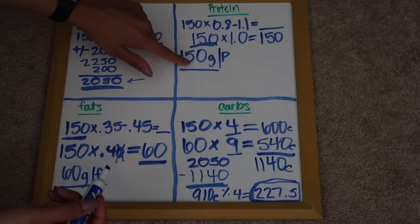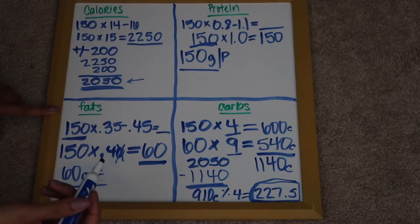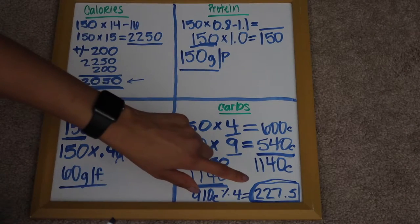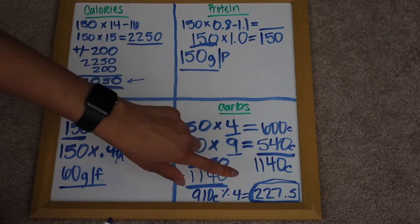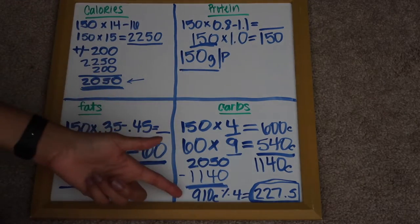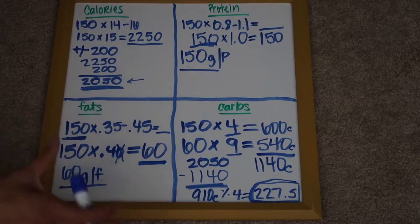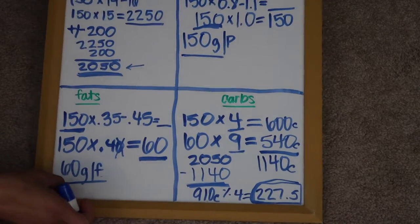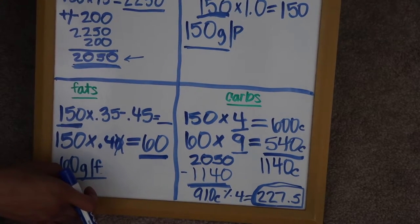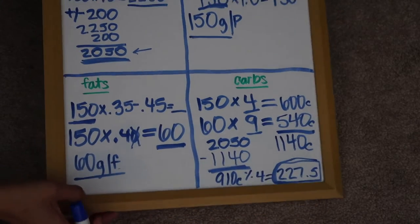And this is my carbs. Protein, I got 150 grams of protein, fats, 60 grams of fat. And my carbs is 227.5 grams of carbs, which is 910 calories. So I hope this makes sense. I will talk a little bit more about this in depth right now, actually. And I am going to be in the camera.